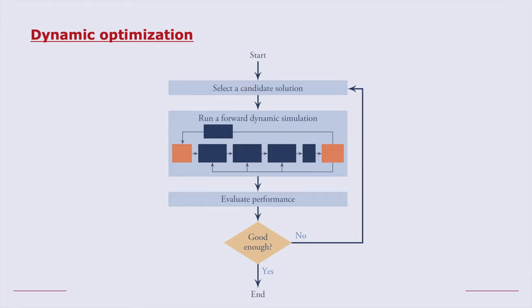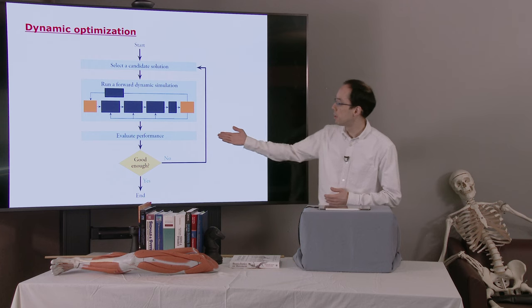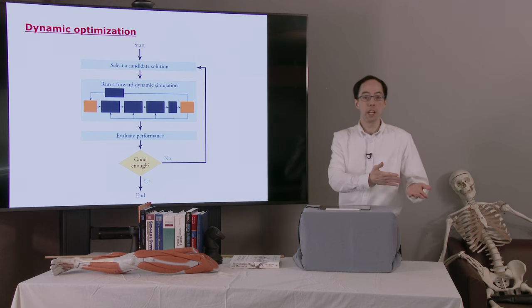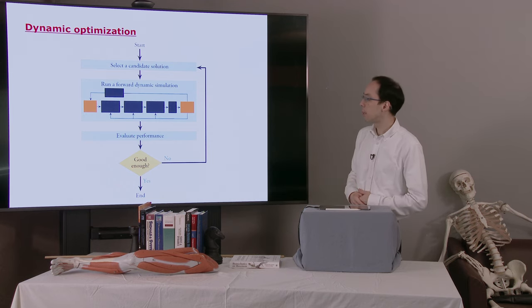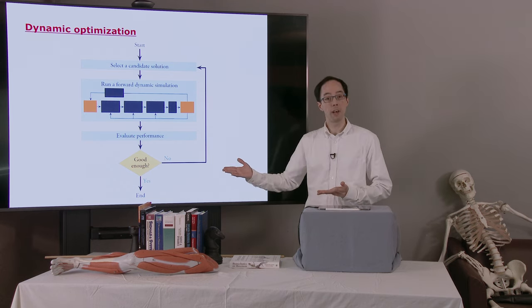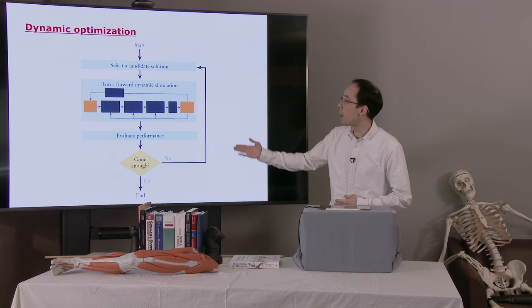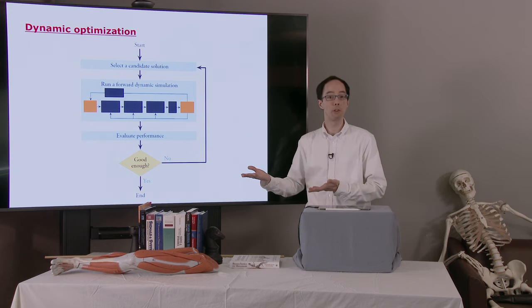So we'll have a candidate solution. We run a forward dynamic simulation. We'll see how far does the model jump. We might ask other things like, how much energy did it consume? Did it get hurt? If it's good enough, then we're done. We found a good solution. Otherwise, we'll go back and select different motor torques and try again.